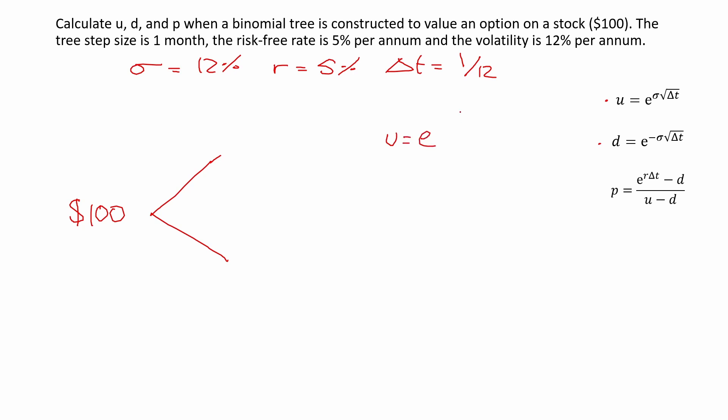Let's use these formulas. u is equal to e to the power of sigma—the volatility in decimal places is 0.12—times the square root of the tree step size, which is 1/12. If we plug this into the calculator, we should get that u is equal to 1.035.